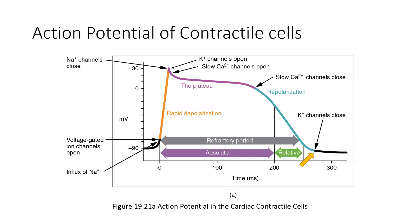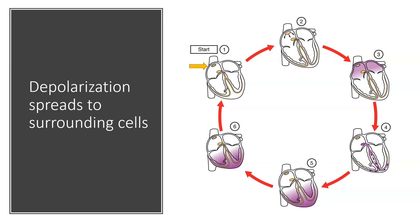Now that we've learned the mechanisms behind the action potentials in pacemaker cells and contractile cells, let's link this together. We begin with the pacemaker cells in the sinoatrial node, which have a spontaneous action potential. This depolarization then spreads to the surrounding cardiac cells. How exactly does this electrical signal spread?